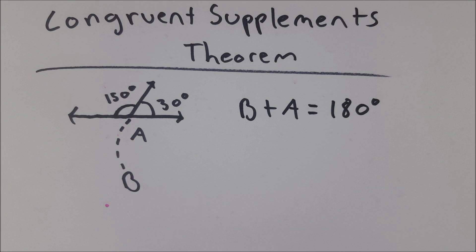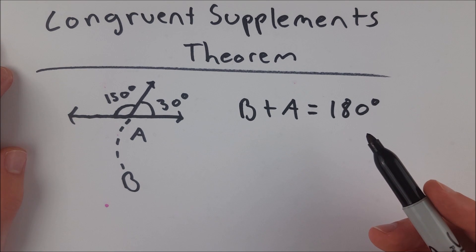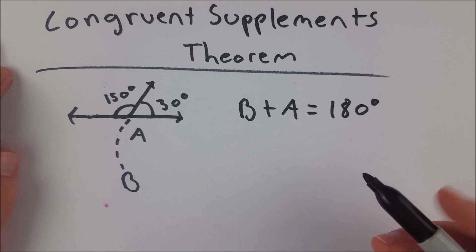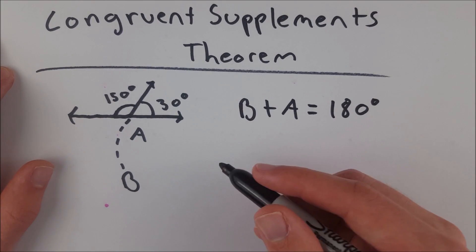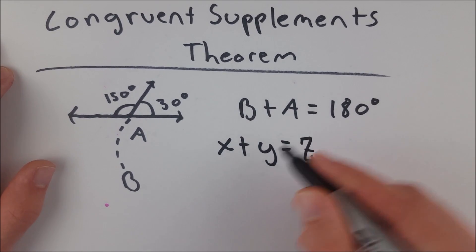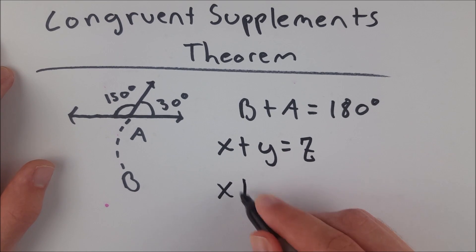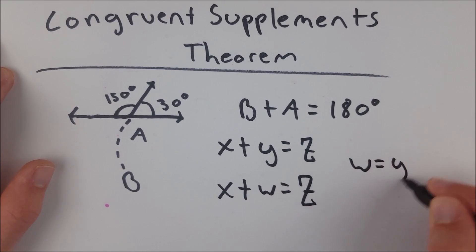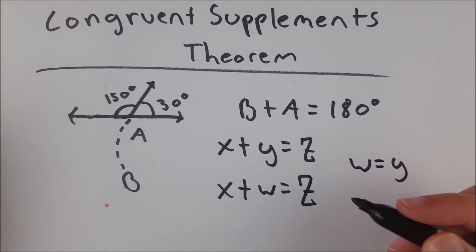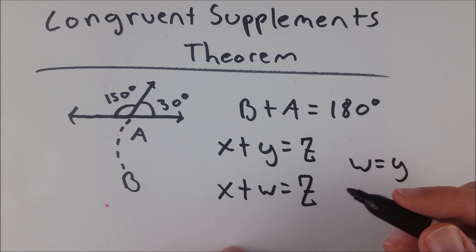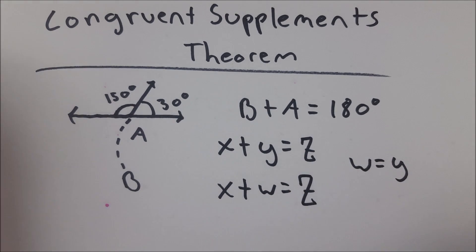Supplementary angles don't have to be adjacent — they can be separate — but they do have to add up to 180 degrees. So the congruent supplements theorem says that if two angles are supplementary to the same angle, they have to be congruent. That's really quite obvious, because all it means is: if x plus y equals z, and x plus w also equals z, then w must equal y. If you're starting with the same thing, add something, and get the same result, the things you add must be the same.